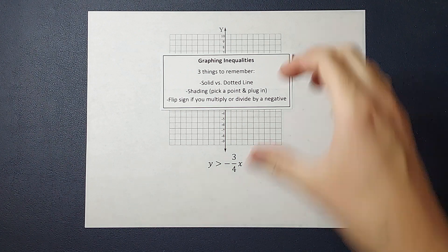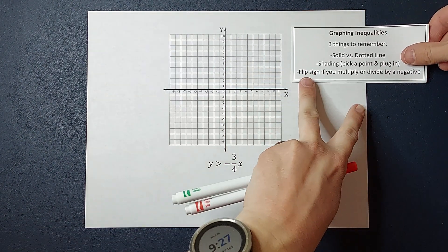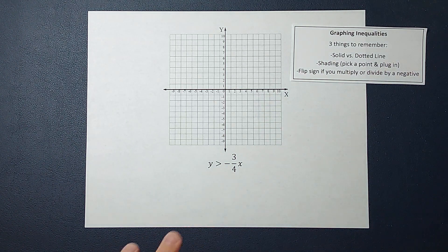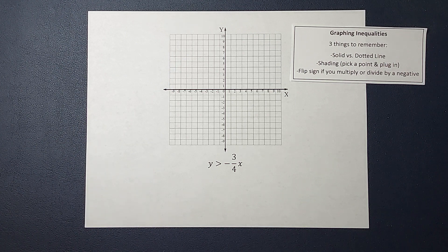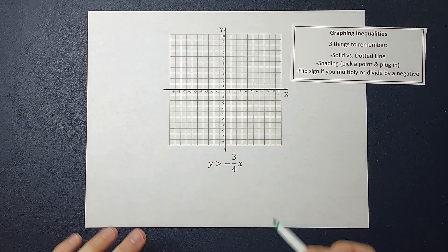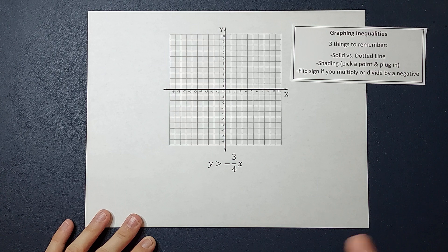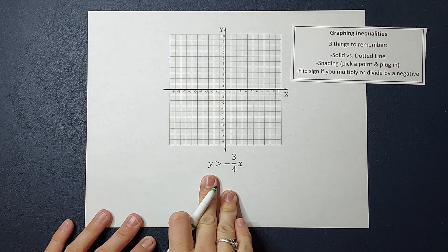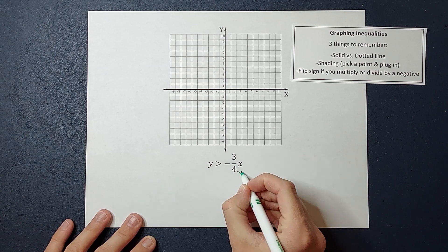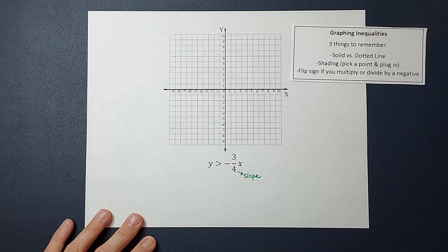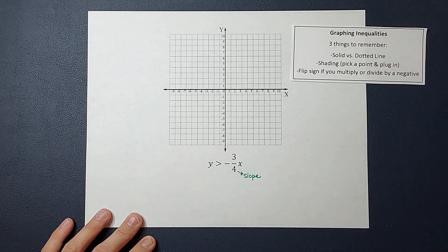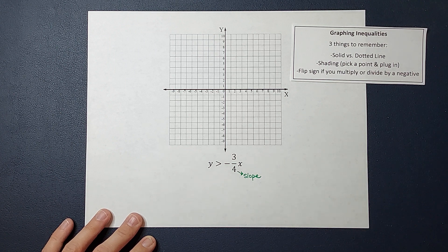We don't have to do that here. So we just need to worry about the solid versus dotted line and the shading. When I first graph this, I'm just going to pretend like this is an equal sign for a second. We are in slope intercept form with Y being alone, which means this is my slope.